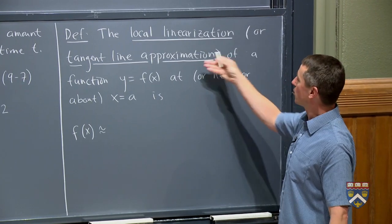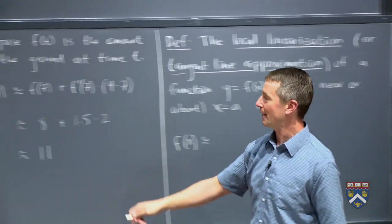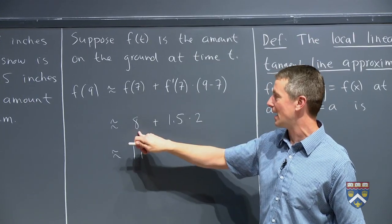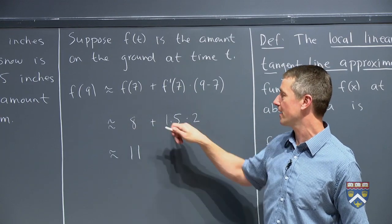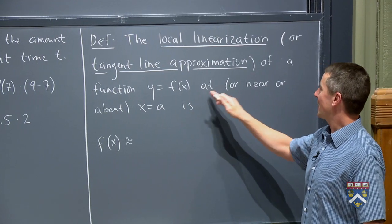So the local linearization or tangent line approximation, because what you're really doing is drawing the tangent line at this point, the point when x is 7, y is 8. You're drawing the tangent line there at a slope of 1.5 for a function y equals f(x).